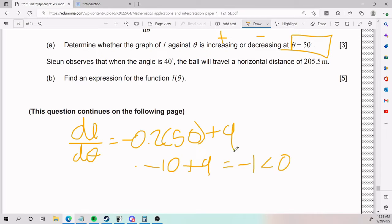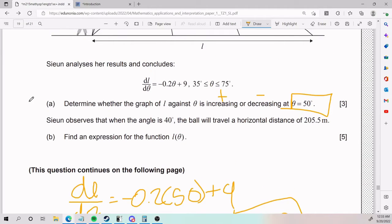So this guy, this negative 1, is negative. It is less than 0, which means that at A it is decreasing. That is how you do part A.